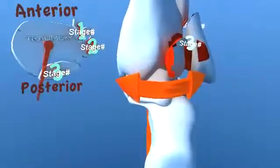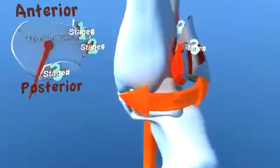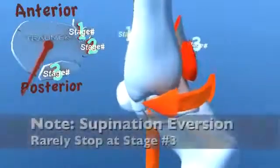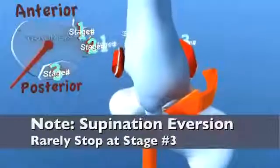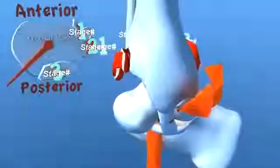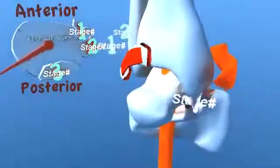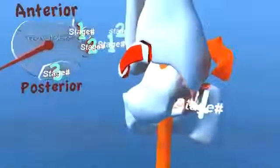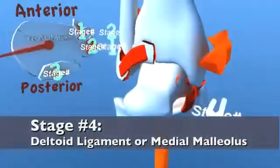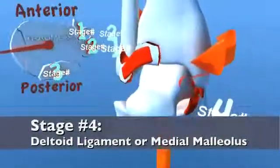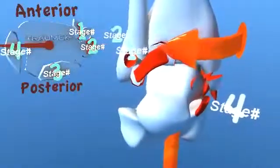Supination external rotation injuries that reach stage 3 rarely stop at this point and usually progress to the final stage. Continued unrestrained lateral rotation of the talus will result in a stage 4 injury involving either a rupture of the deltoid ligament complex or a transverse fracture of the medial malleolus.